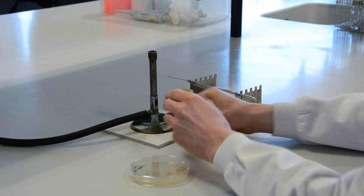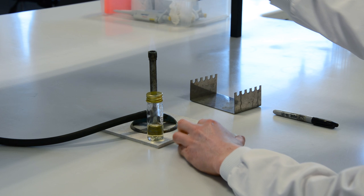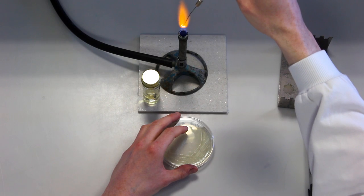A cool sterile loop is used to pick off a few single colonies from a pure culture grown on a solid medium.